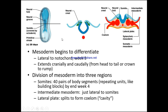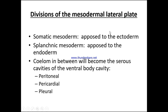The mesoderm begins to differentiate — lateral to the notochord, week three — extending cranially and caudally from head to tail. There are three divisions of the mesoderm: the somites, 40 pairs of body segments repeating like building blocks by the end of week four; the intermediate mesoderm just lateral to the somites; and the lateral plate, which splits to form the coelom — the cavity. Divisions of the lateral plate: somatic mesoderm apposed to the ectoderm; splanchnic mesoderm apposed to the endoderm; and the coelom in between, which will become the serous cavities — peritoneal, pericardial, and pleural.